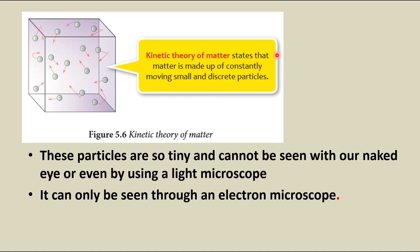The kinetic theory of matter states that matter is made up of constantly moving, small and discrete particles. These particles are so tiny they cannot be seen with our naked eye or even by using a light microscope. They can only be seen through an electron microscope.